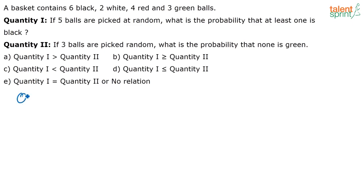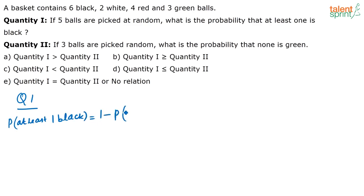Let us look at Quantity 1. They have given that 5 balls are picked at random from a total of 15 balls. What is the probability that at least 1 is black? The probability that at least 1 is black is equal to 1 minus the probability that no black is picked. This will give the probability that at least 1 black is picked.